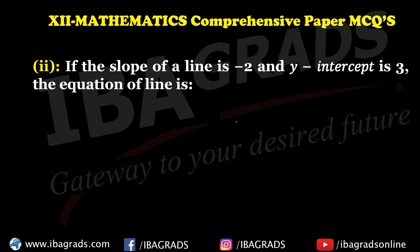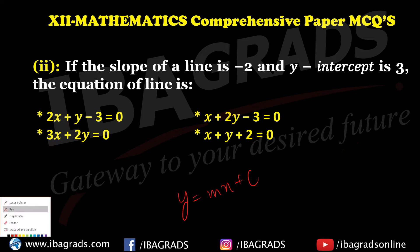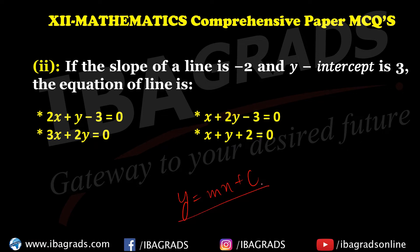Question number two: the slope of the line is minus two, y-intercept is given. The equation of the line — the slope formula is y = mx + c. So y = mx + c, where m = –2, giving us y = –2x + c. Solve for the required answer.